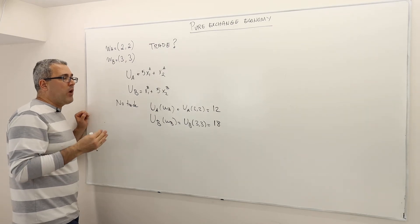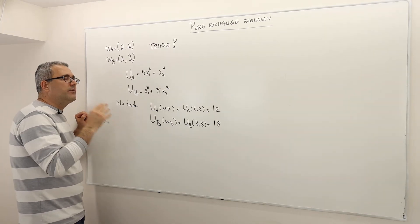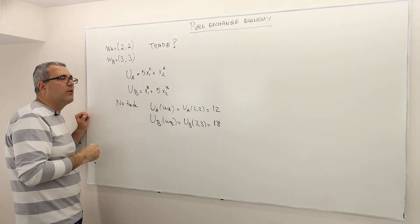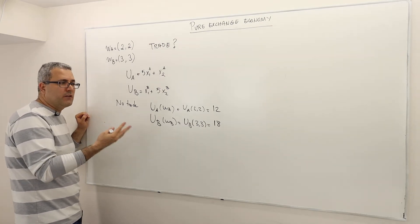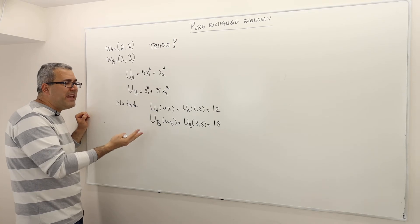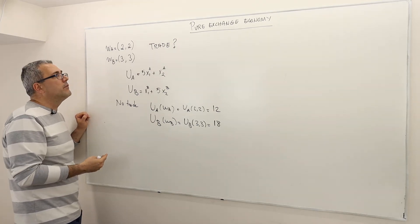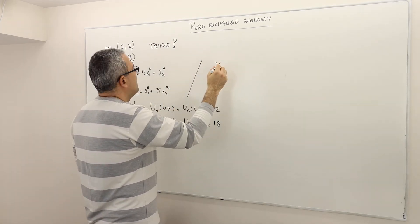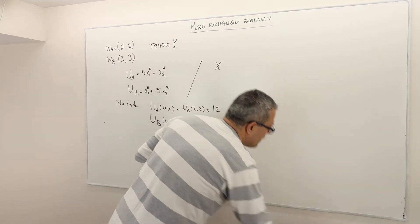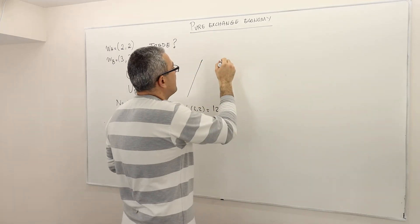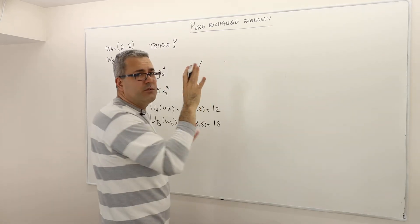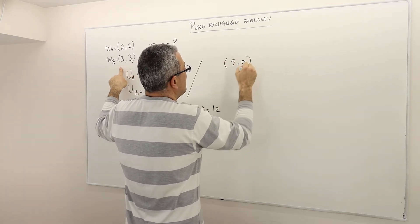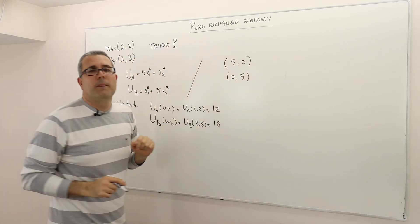The thing is, do these guys have incentive to make a trade? That means, is there any feasible allocation that is going to make them happier? The answer is yes, there is. For instance, consider the following allocation: (5,0) and (0,5). This is CA, a consumption, and this is CB.